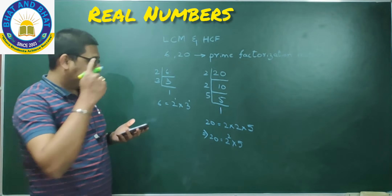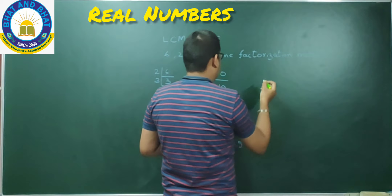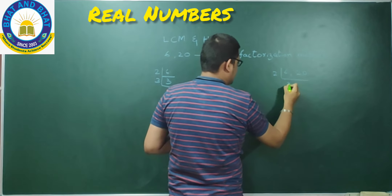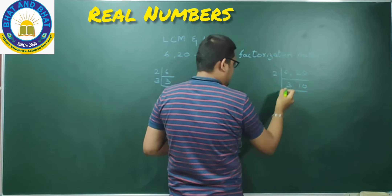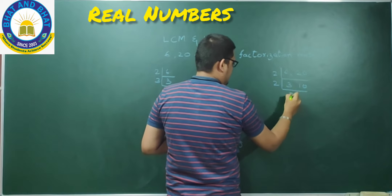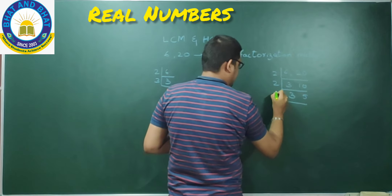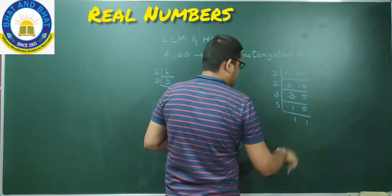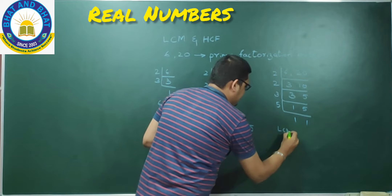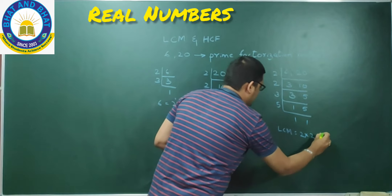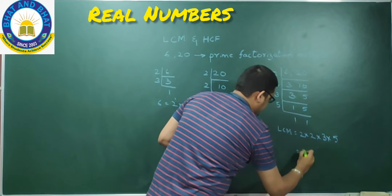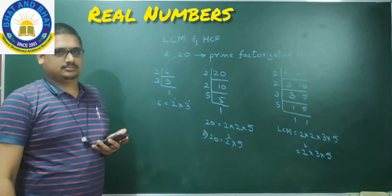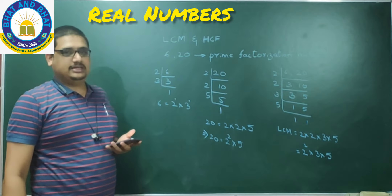Now if I have to find out LCM, let us follow the method of calculation. We do common factorization: from 6 and 20, taking out 2 gives 3 and 10; from 10 taking out 2 gives 5; then 3 and 5 remain. Therefore LCM is equal to 2 into 2 into 3 into 5, which can be expressed as 2 power 2 into 3 into 5. This is the calculation of LCM.